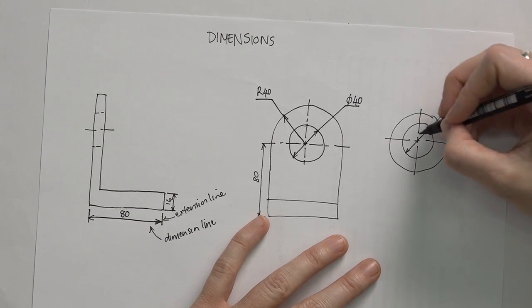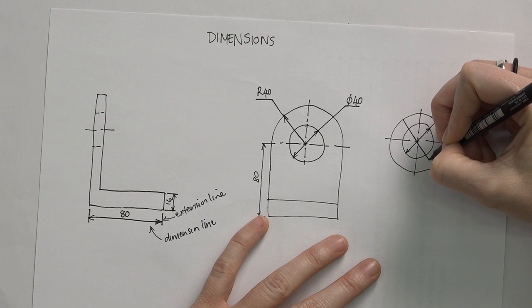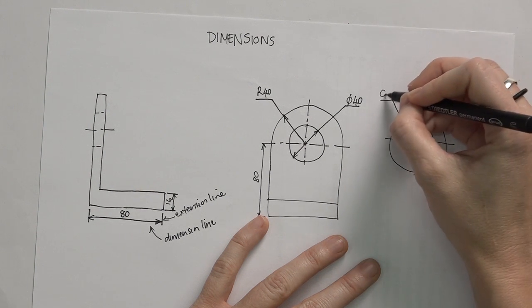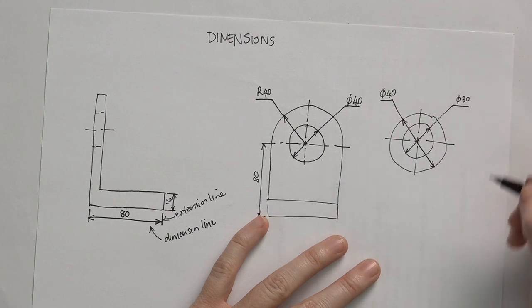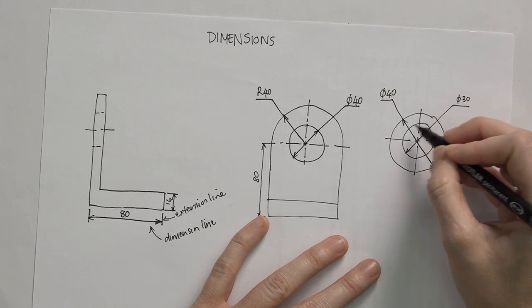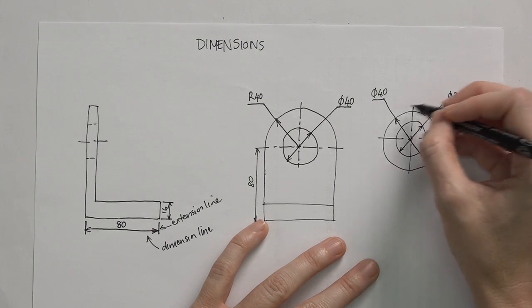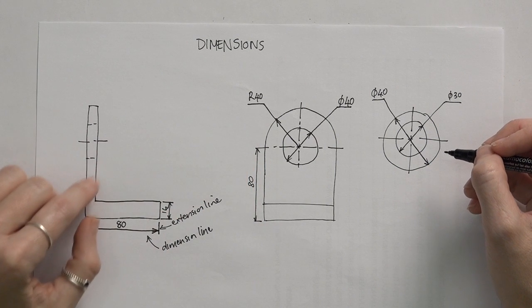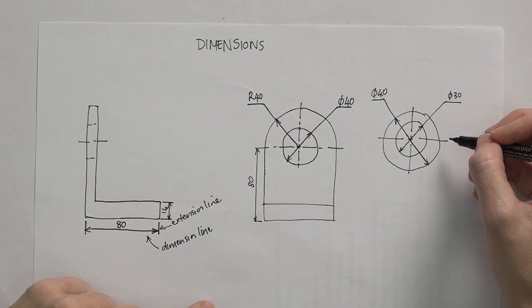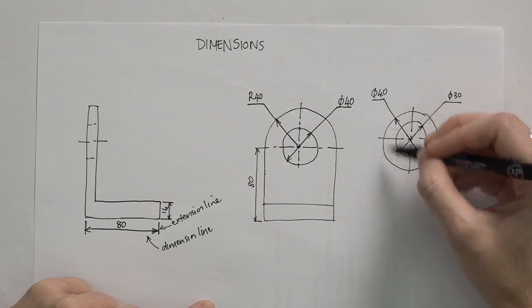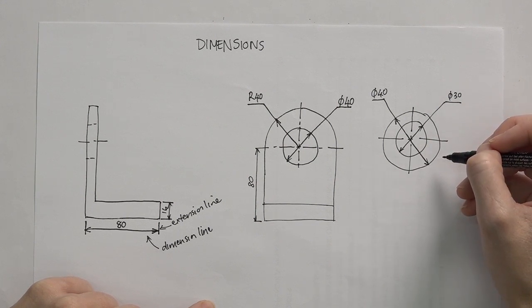So if this for example was 30, I'll make a second one to indicate the larger diameter. No more than two of these dimensions on a circle. If there were another circle or another half circle, you will use one of the other views to write in that dimension. But no more than two dimensions on the front face of a circle when you have it like this.